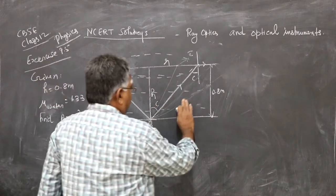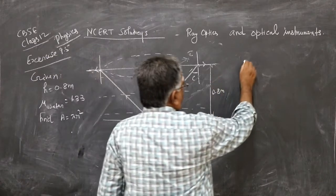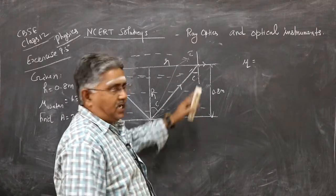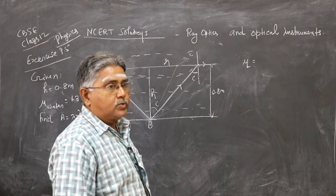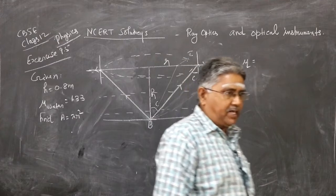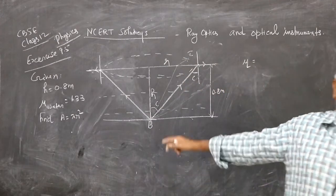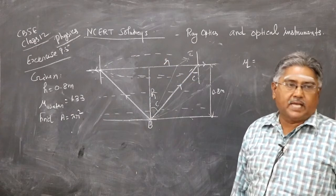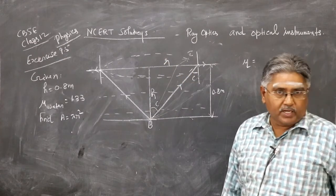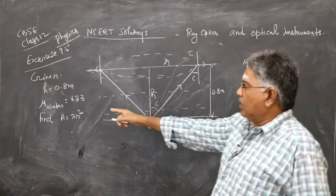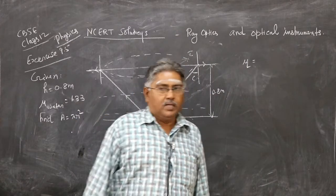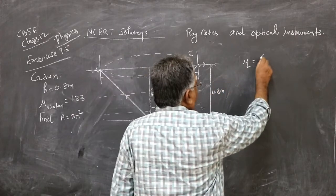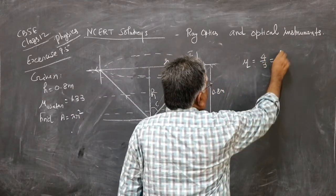Now, we know that mu is equal to 1 by sine C, where C is the critical angle. Mu is the refractive index of the denser medium. Here the denser medium is water compared to air. So it should be 1 by sine C. Mu is equal to, but mu is given to be 1.33. Just for convenience sake, take it as 4 by 3. Therefore, mu is 4 by 3 equals 1 by sine C.